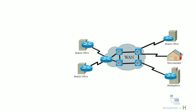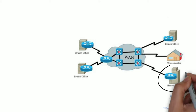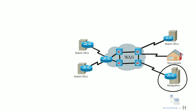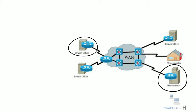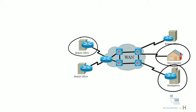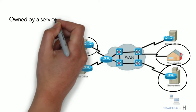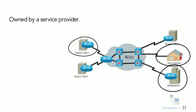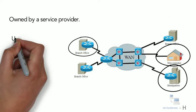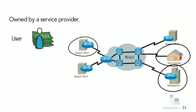As shown in the figure, WANs are used to connect the headquarters LAN to remote LANs in branch sites and telecommuter sites. A WAN is owned by a service provider, and a user must pay a fee to use the provider's network services to connect remote sites.